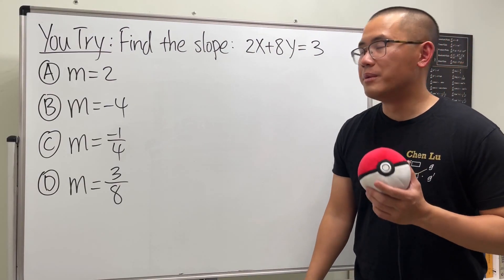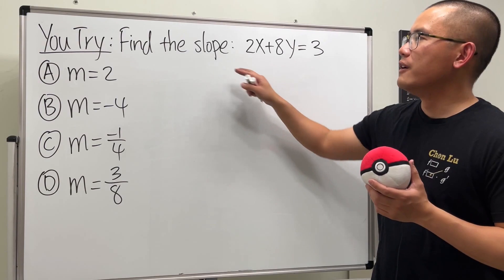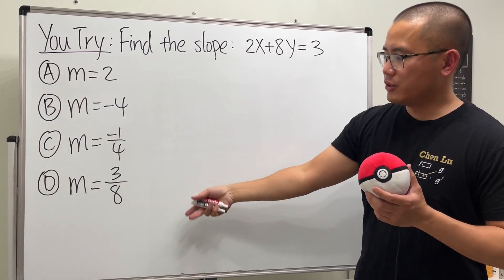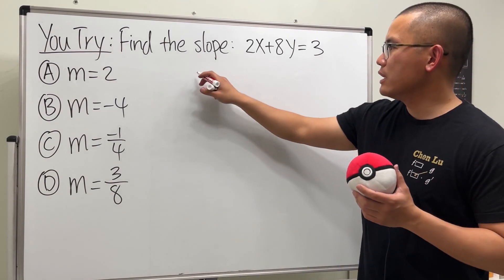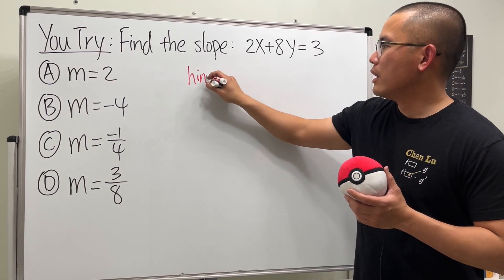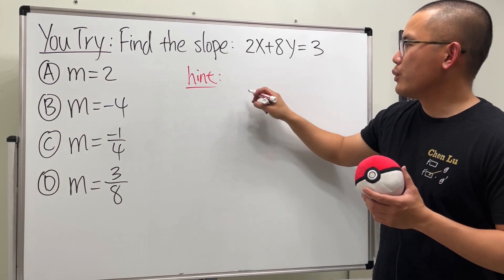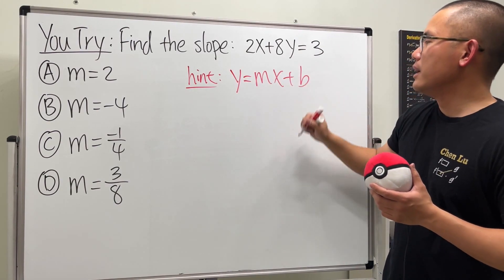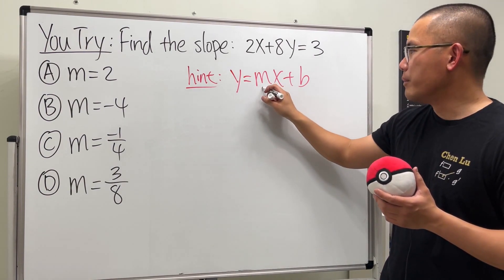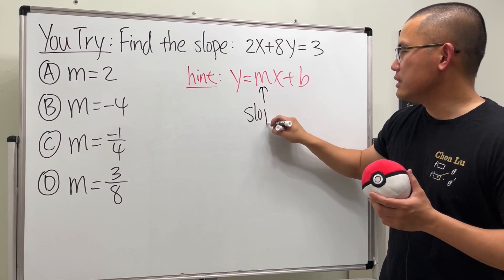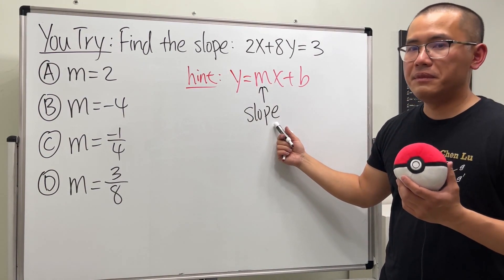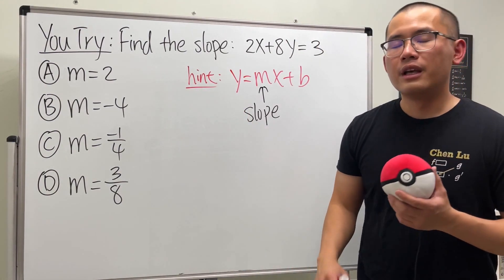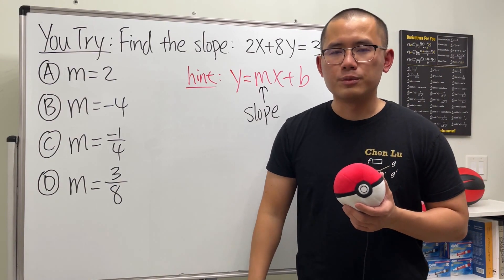All right, now it's your turn. Go ahead and try this question: find the slope of this line. And we have the answer choices there. And remember, I will give you guys the hint, and the hint is put the equation in the form of y equals mx plus b. Because once we have the equation in this form, the m right here is exactly what we are looking for, namely the slope. And let me know what the answer is in the comment down below. Check out my other videos for more algebra practice questions.